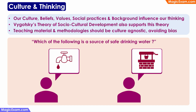Next, let us look at the connection between culture and thinking. Our culture — our beliefs, values, social practices and background — influences our thinking to a large extent. Vygotsky's theory of socio-cultural development also supports this, because he says that social and cultural factors — the S and the C out of his SCL — affect and influence cognitive development, and so they will influence thinking as well.